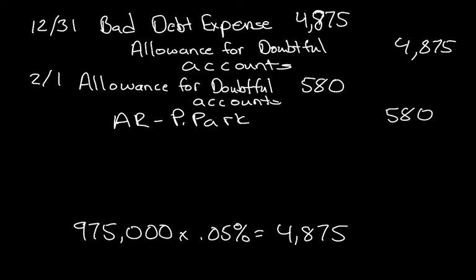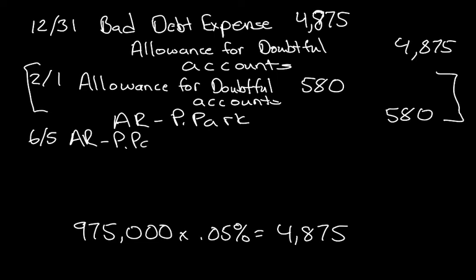Now, on June 5th, P. Park comes back and wants to pay off his bad debt. So we're going to reverse this transaction first. When clients come back and pay, the first thing you do is reverse their transaction to have their debt declared bad. So we're going to reverse it — that's a debit to the accounts receivable and a credit to the allowance for doubtful accounts account.